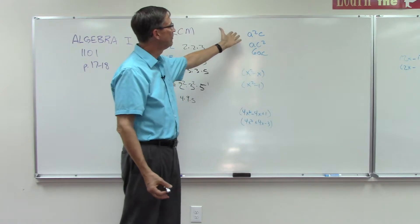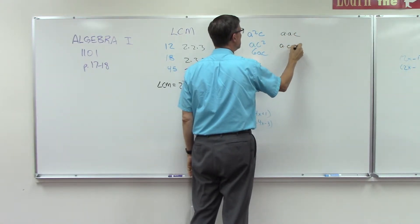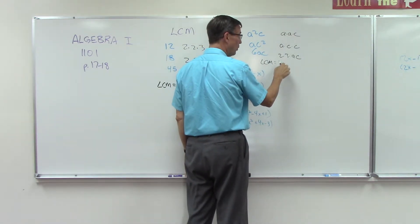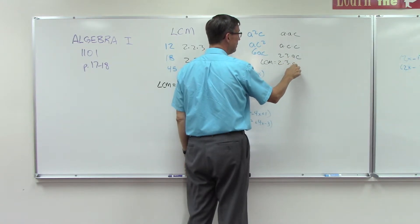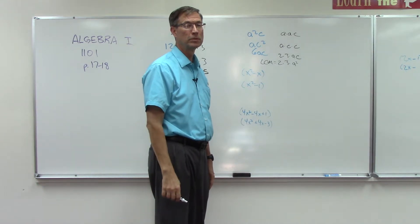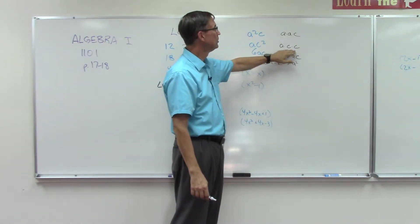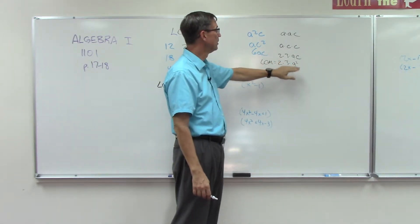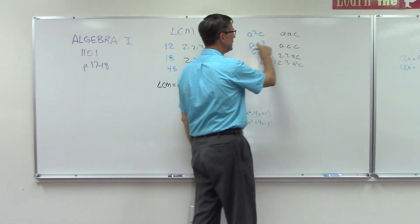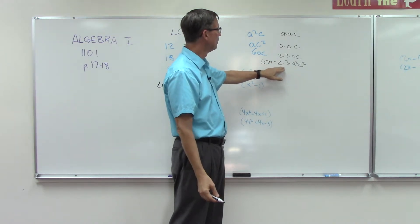Now let's take three algebraic terms with variables. Breaking them down: a²c = a times a times c; ac² = a times c times c; 6ac = 2 times 3 times a times c. For the LCM, 2 appears once, 3 appears once. For a: the most it appears in any one term is twice, so we use a². For c: the most it appears in any one term is twice, so we use c². Multiply 2 times 3 to get 6, then the LCM is 6a²c².